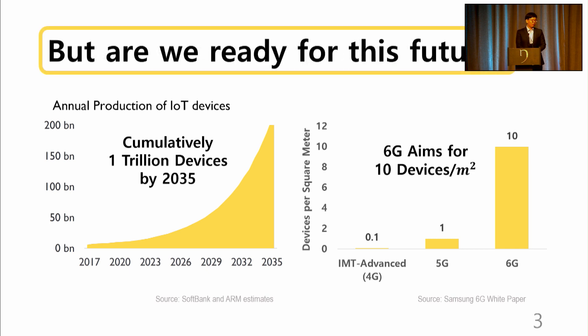And 6G is aiming for network density of 10 devices per square meter to support the exponential growth. However, in reality, a practical system supporting such massive demands are very hard to find. So we thought to ourselves maybe we should make one for the prosperous future.